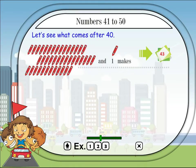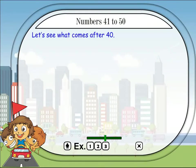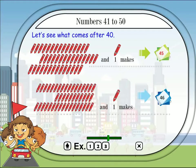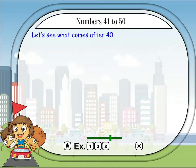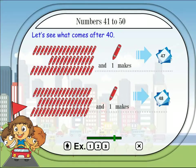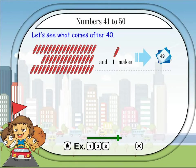Numbers 41 to 50. Let's see what comes after 40. 40 and 1 makes 41. 41 and 1 makes 42. 42 and 1 makes 43. 43 and 1 makes 44. 44 and 1 makes 45. 45 and 1 makes 46. 46 and 1 makes 47. 47 and 1 makes 48. 48 and 1 makes 49.